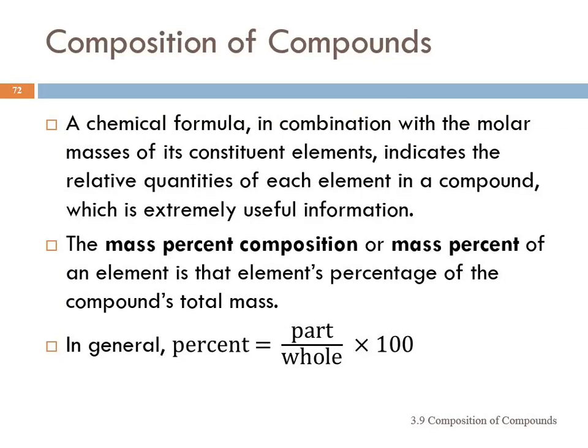Composition of compounds. The chemical formula gives us relative quantities of each element in a compound. We can look at something called a mass percent composition, or a mass percent of a particular element in a compound. It's helpful to remember the general formula for a percentage. Percent, in general, is the part divided by the whole times 100. Whatever part you're interested in, divided by the whole thing times 100.